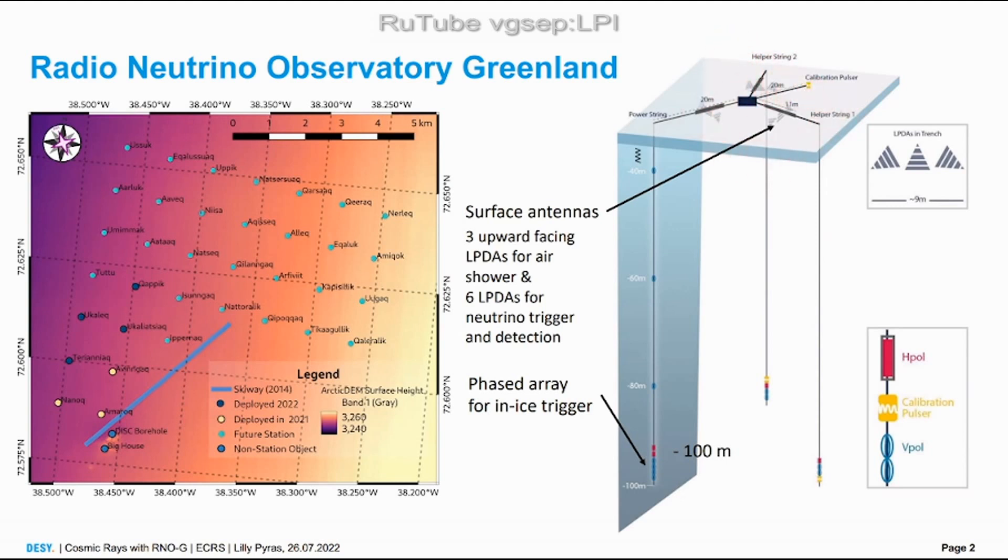At the top, three of the surface antennas are facing upward to detect cosmic rays and six are facing downward which are also triggering neutrinos. The in-ice ones are little inclined.